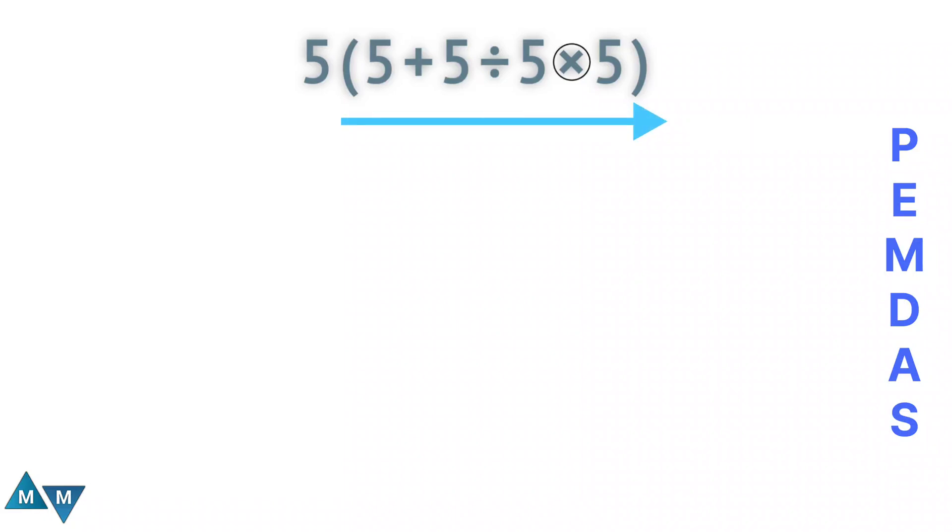Well, in this case, I see division first. So this is what I have to do first. So 5 divided by 5 will be our first move, which equals 1.